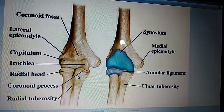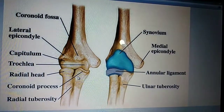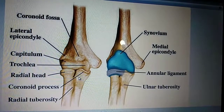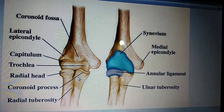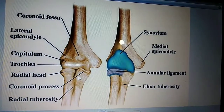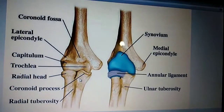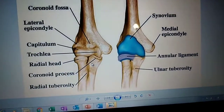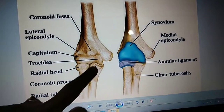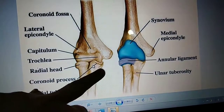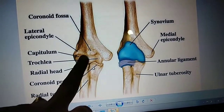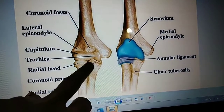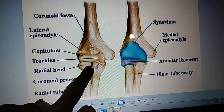Today's topic is about elbow joint dislocation, but before starting on dislocation you should know the applied anatomy of the elbow joint. Basically, the elbow joint is a complex joint — as you can see in this picture — we call it a hinge joint because we have three bones that are articulating.